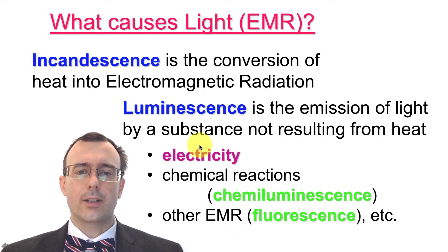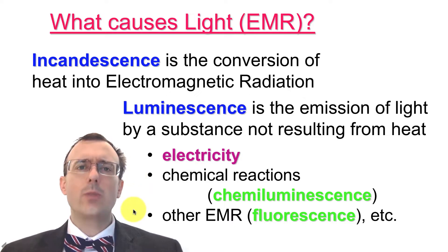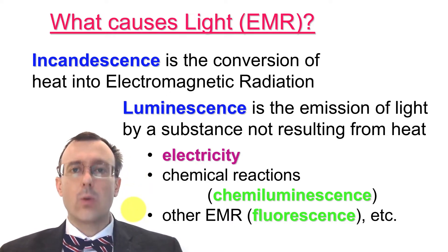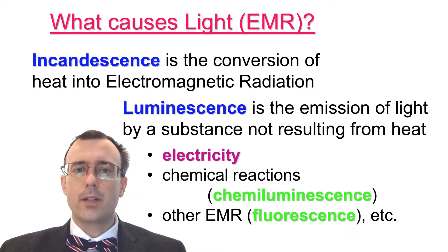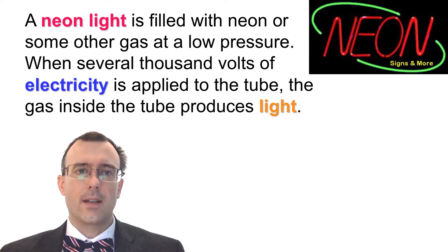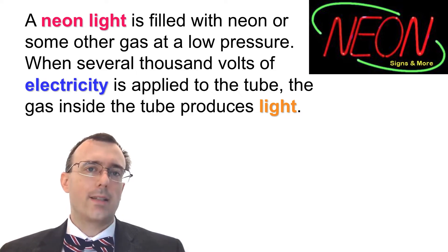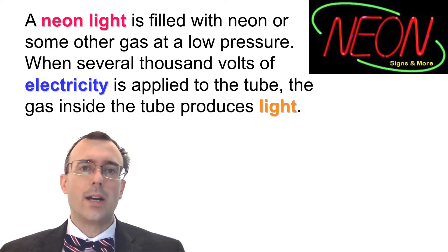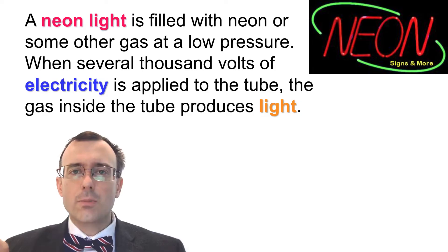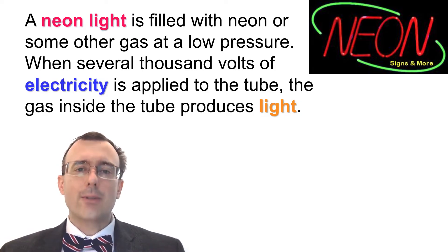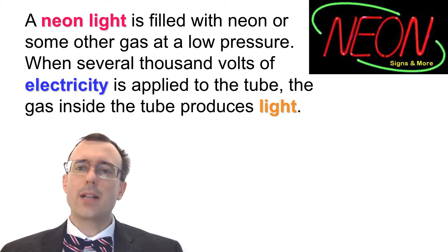Today we're going to focus on electricity — specifically how we can convert electricity to light. One way is through LEDs, light-emitting diodes, but another way is through neon lights. A neon light is basically a tube filled with neon or some other gas at a low pressure — meaning a small amount of gas — and several thousand volts of electricity are applied to the tube, causing the gas inside to produce light.